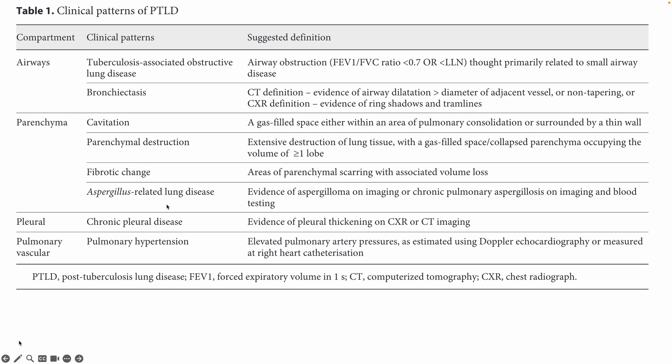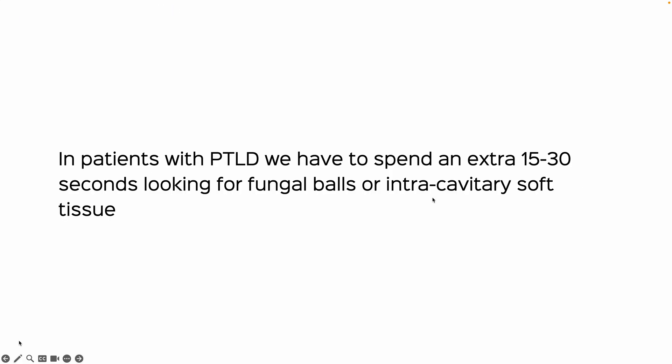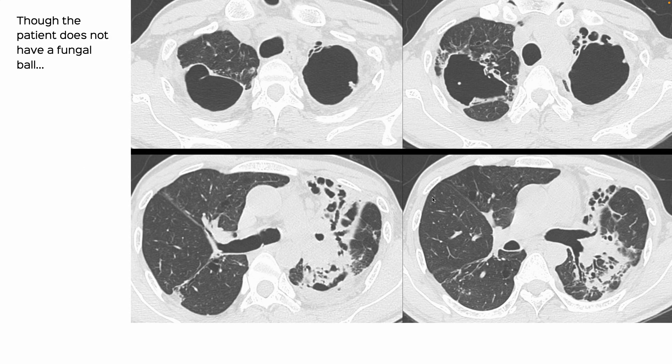One of the things — and you can see it here — is to also look for aspergillus-related lung disease, to look for fungal balls or chronic pulmonary aspergillosis. In patients with PTLD who have cavities, we as radiologists have to spend an extra 15 to 30 seconds looking for fungal balls or intracavitary soft tissue.